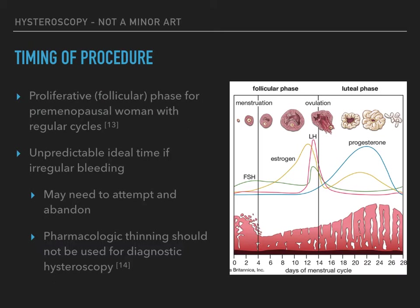Hysteroscopy for premenopausal women with regular menstrual cycles should be done in the proliferative, or follicular phase, as this renders the best visualization of the uterine cavity. During the secretory phase, the thick endometrium can mimic endometrial polyps and can lead to inaccurate diagnoses. Furthermore, during menstruation blood may interfere with visualization. In reproductive age women with irregular uterine bleeding, the ideal time for the procedure is unpredictable. Patients should be counselled that a procedure may be attempted but may be rescheduled if obscuring blood makes it impossible to evaluate the uterine cavity. Often, surgery is still feasible because fluid pumps facilitate visualization by rapidly clearing debris and blood.